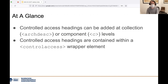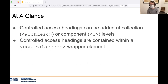Broadly speaking, EAD allows for adding controlled access headings at any level of a finding aid. The control access wrapper element, which encapsulates all the controlled access headings in a descriptive item, can be added either at the collection level of an archdesc or at the component level of C. This flexibility allows for adding headings at whichever level is appropriate. For example, if you're doing detailed item-level description, you may want to add an item's author or correspondent; or if doing higher-level processing, you may only want to add headings at the collection level.